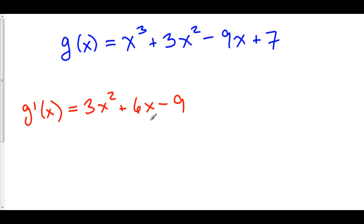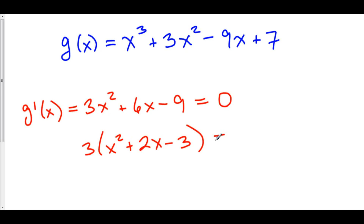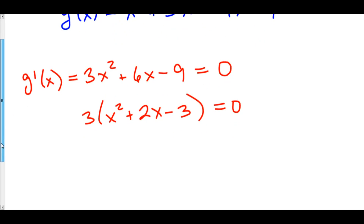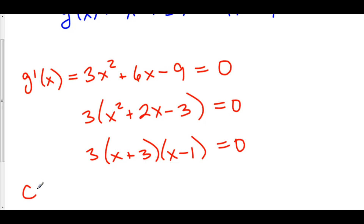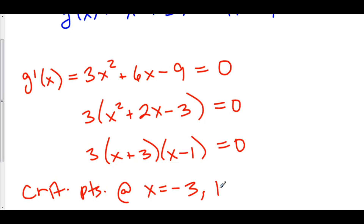This always exists, so let's set it equal to zero. We can factor out a three, and we're left with x squared plus 2x minus 3. We can further factor this as (x plus 3)(x minus 1), which means that we have critical points at x equals negative 3 and at x equals 1.